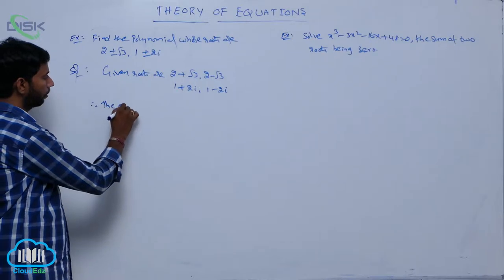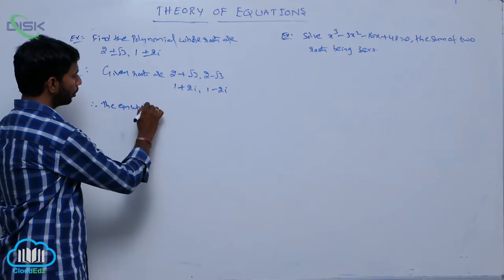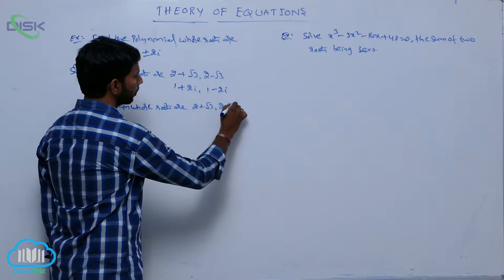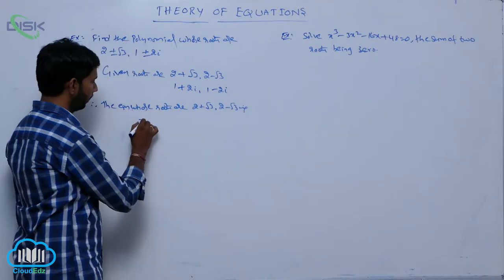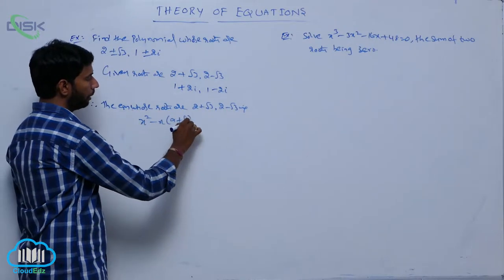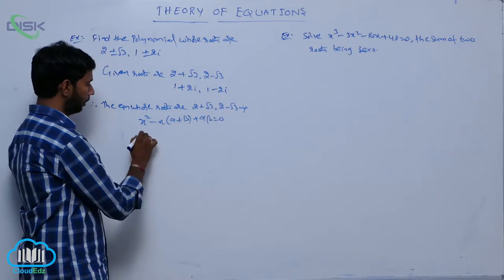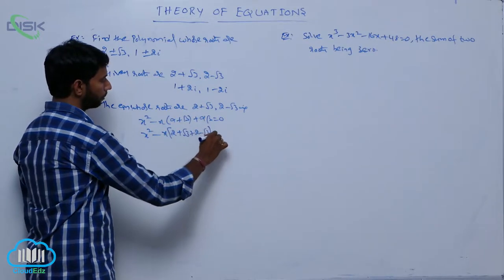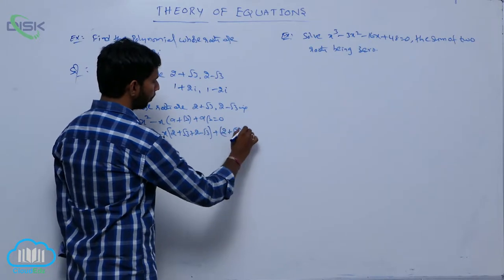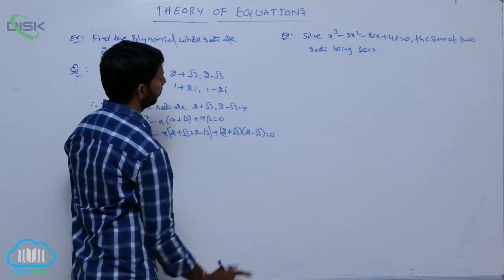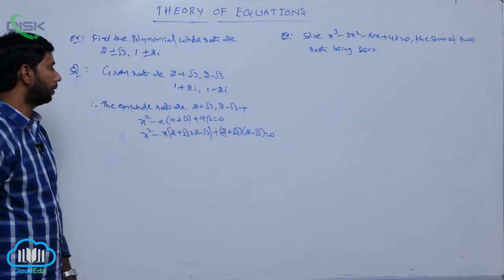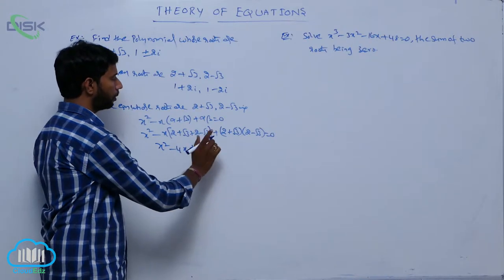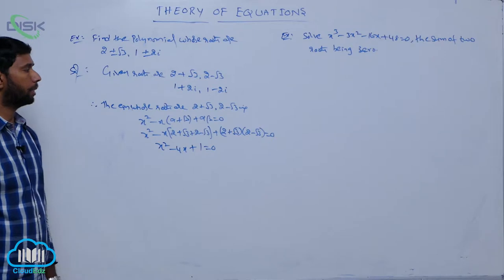Therefore, the equation whose roots are 2 plus root 3 and 2 minus root 3 is x squared minus x times (alpha plus beta) plus (alpha times beta) equals 0. That is, x squared minus x times (2 plus root 3 plus 2 minus root 3) plus (2 plus root 3)(2 minus root 3) equals 0. That gives x squared minus 4x plus 1 equals 0.